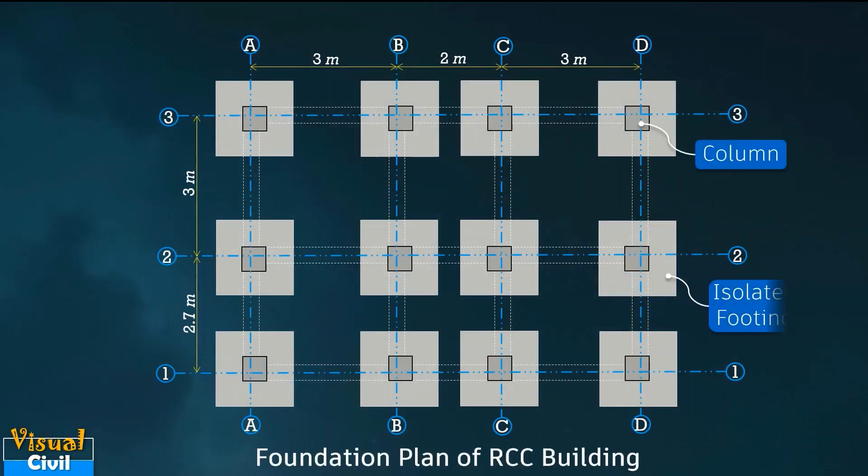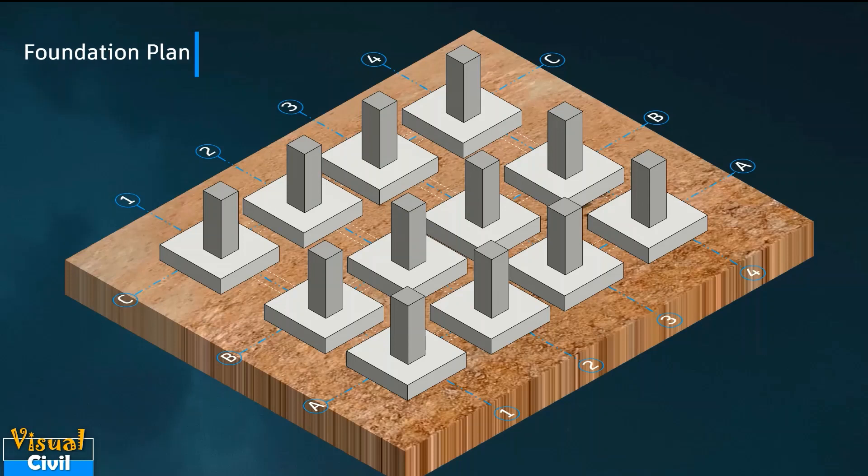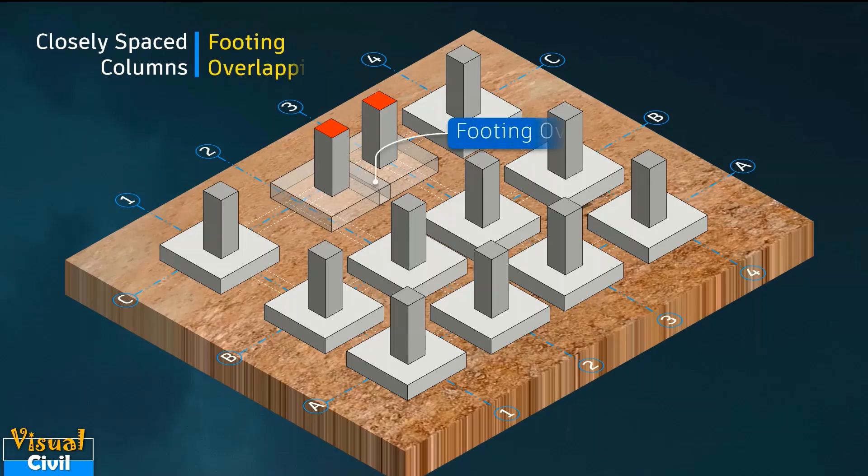Consider a foundation plan of an RCC building with isolated footing on hard soil strata. If two adjacent columns are closely spaced, then the footings of these columns may overlap. This leads to the construction of combined footing.